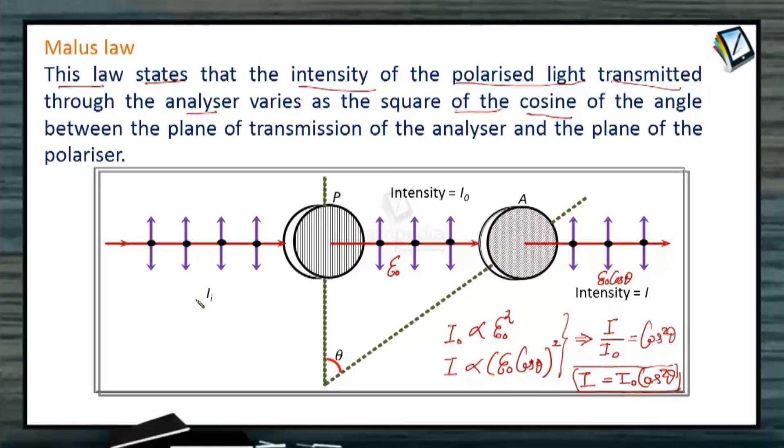And one more point I would like to remind you that in last video I explained that how after polarization intensity of light becomes half. So here we should also know that I₀ is I initial, which is the intensity of unpolarized light, divided by 2. Here it is unpolarized light and this is our polarized light. This is analyzer and this is polarizer.